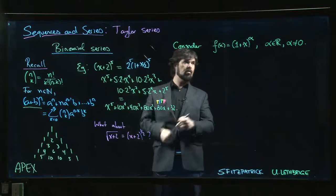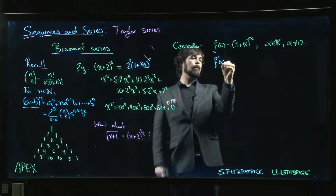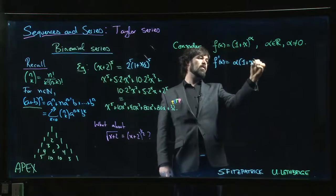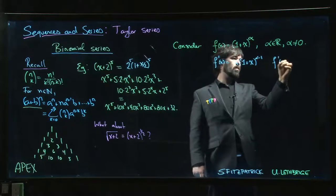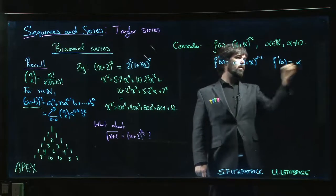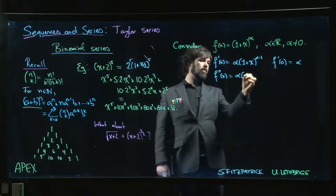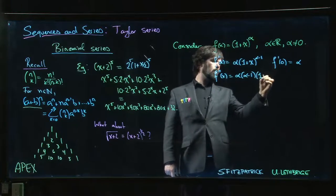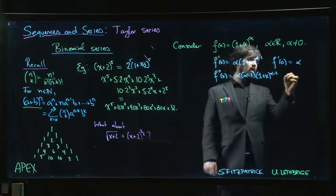Take derivatives, set them equal to 0. We've got f of x, so we look at f prime of x. We get alpha times 1 plus x to the alpha minus 1, so f prime of 0 is alpha. f double prime we get alpha times alpha minus 1 times 1 plus x to the alpha minus 2, so the second derivative at 0 is alpha times alpha minus 1.